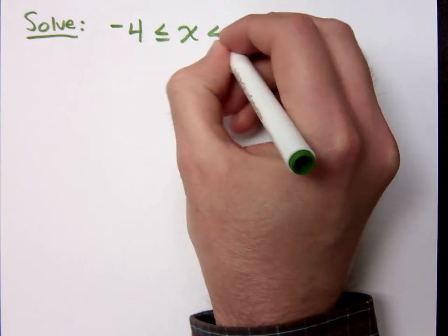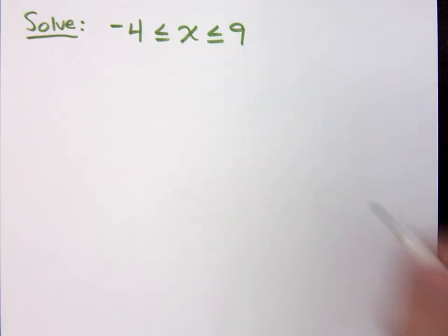Negative 4 is less than or equal to x which is less than or equal to 9. This is what we call a three-part inequality. Do you know why it's called a three-part inequality? It's got three parts, right?